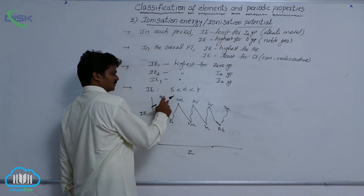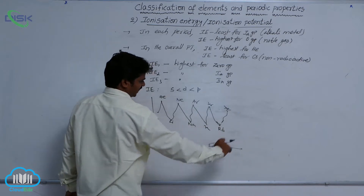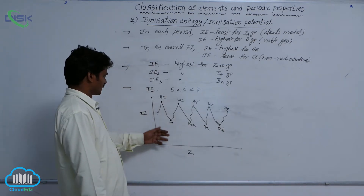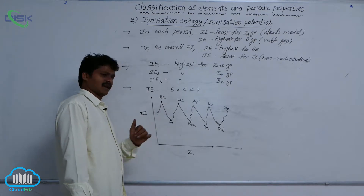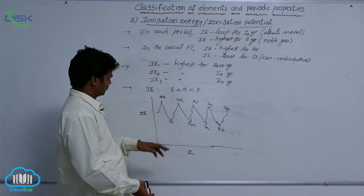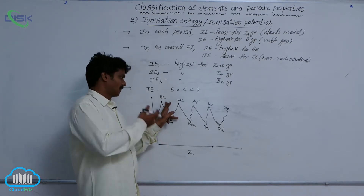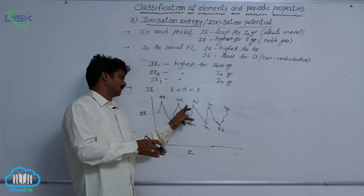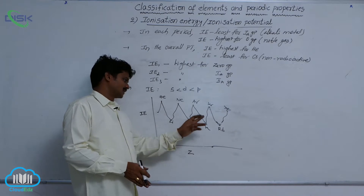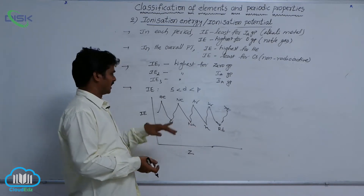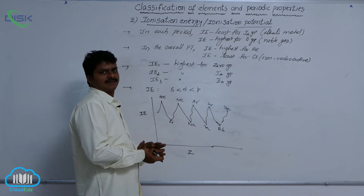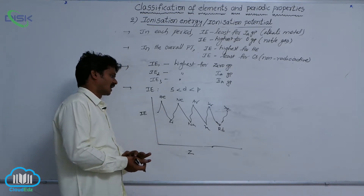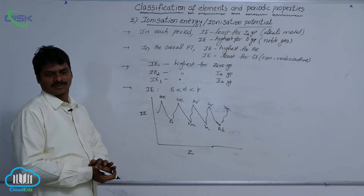Here also, from helium to xenon there is a decreasing trend. So this is the ionization energy versus atomic number graph, in which peaks and dips are formed. The maxima are occupied by noble gases and the minima are occupied by alkali metals.